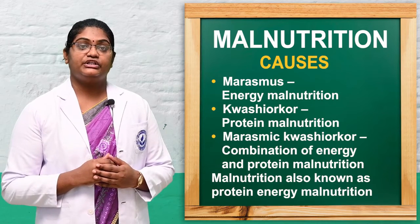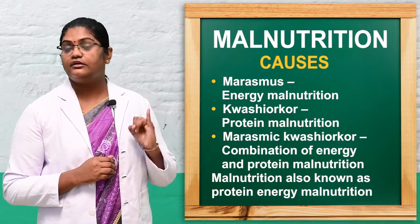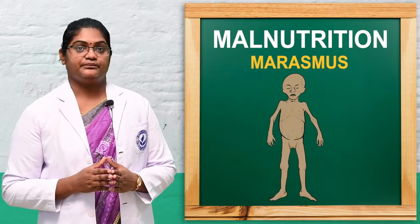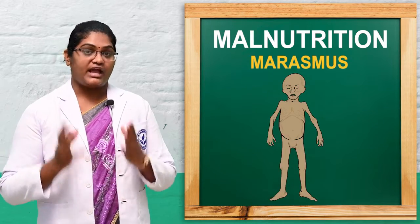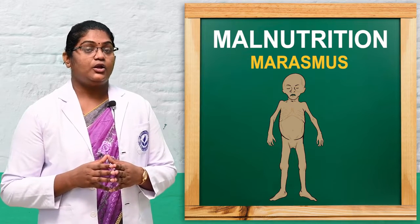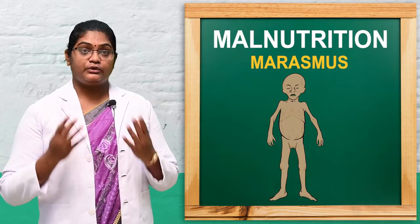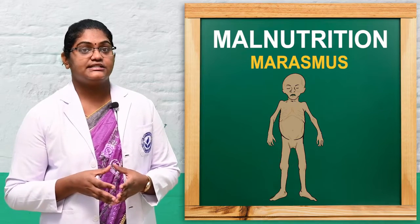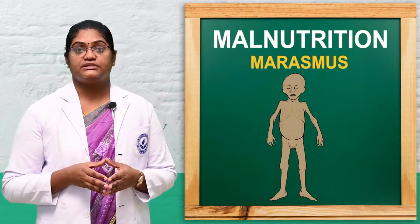Under protein energy malnutrition we will discuss marasmus and kwashiorkor. Marasmus is a form of malnutrition characterized by loss of weight, loss of subcutaneous fat, and wasting of the muscles.